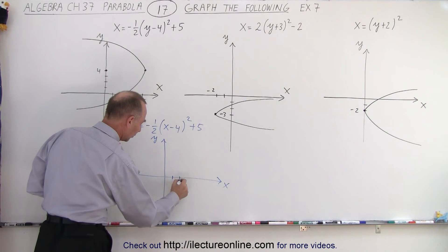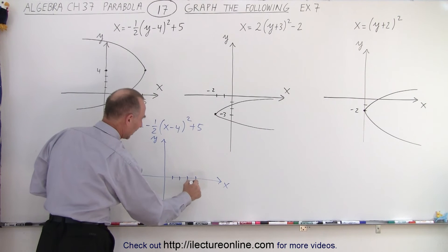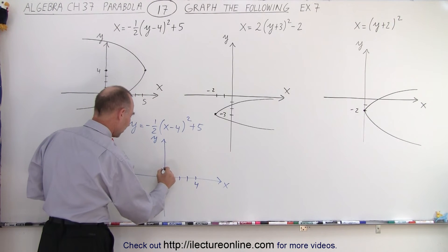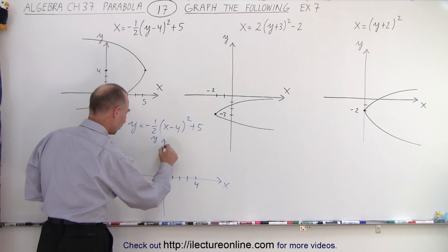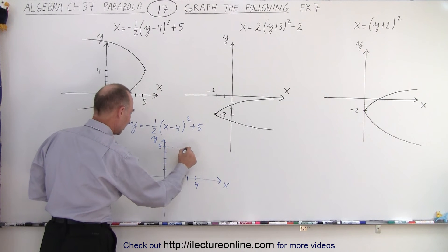So 1, 2, 3, 4. And a shift in the y direction of plus 5. 1, 2, 3, 4, 5. And so where they meet, that's going to be the vertex.